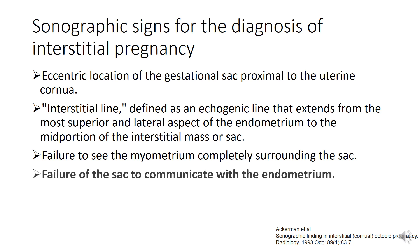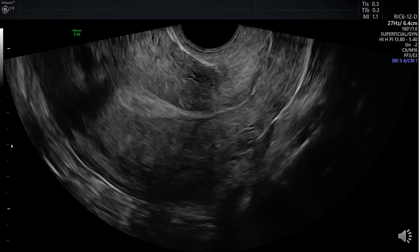The last feature is the failure of the sac to communicate with the endometrium. Here, we can appreciate again the distinct separation of the endometrium from the pregnancy, indicating that this is an ectopic interstitial pregnancy.